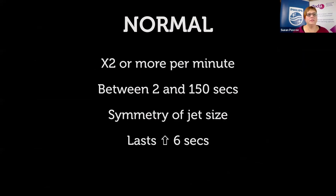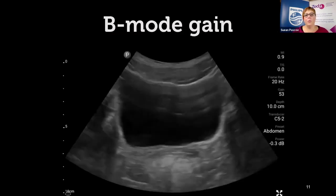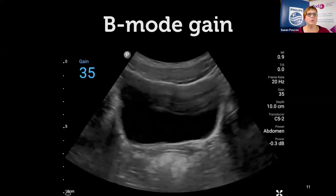If you don't see all of that, is there some sort of partial obstruction — a stone blocking the flow of urine? Let's cover some technical things. It's really important to get your B-mode gain set up nicely first. To get a good color picture, you first have to have a really good 2D picture. Make sure the gain is right, depth and focus settings are good, and color sensitivity and color gain are optimized to maximize chances of seeing the ureteric jet.